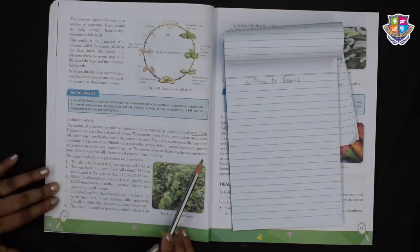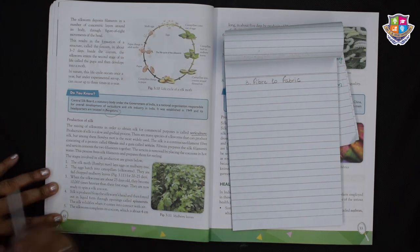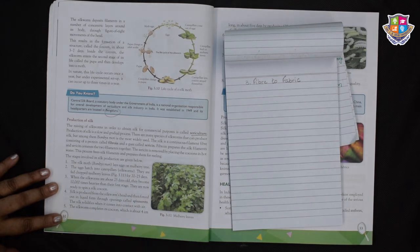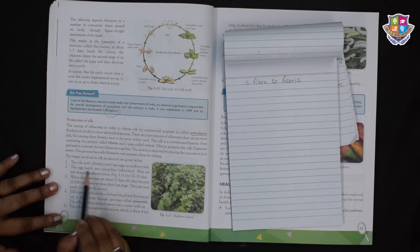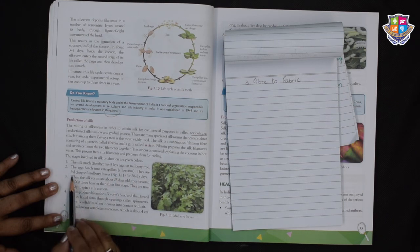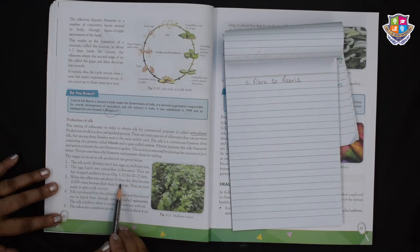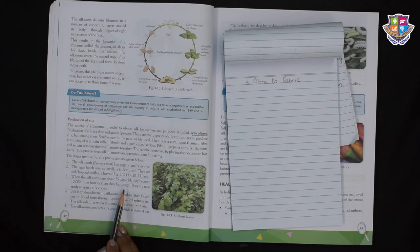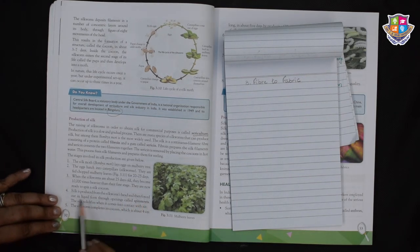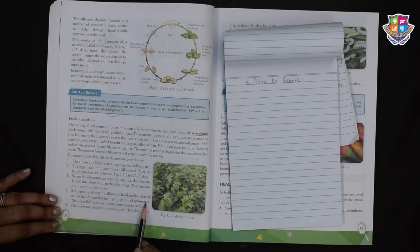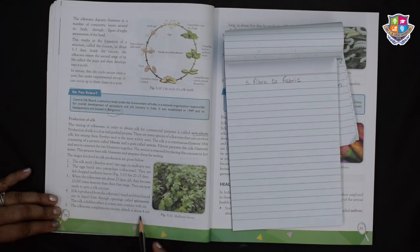The sericin is removed by placing the cocoons in hot water. This process frees silk filaments and prepares them for reeling. The silk moth Bombyx mori lays eggs on a mulberry tree. The eggs hatch into caterpillars, that is silkworms. They are fed chopped mulberry leaves for 20 to 25 days. When the silkworms are about 25 days old they become 10,000 times heavier than their first stage. They are now ready to spin a silk cocoon. Silk is produced from silkworms head and then forced out into a liquid form through openings called spinnerets. The silk solidifies when it comes to contact with air.